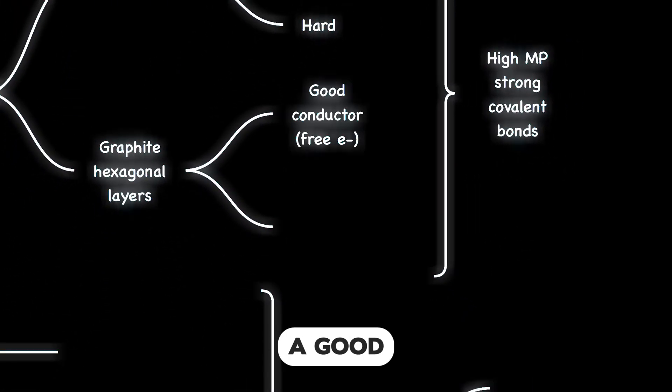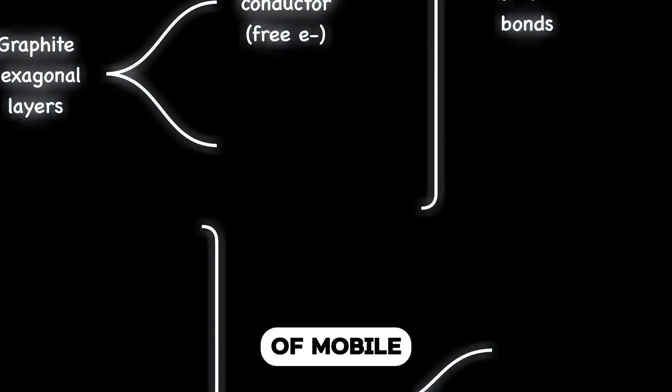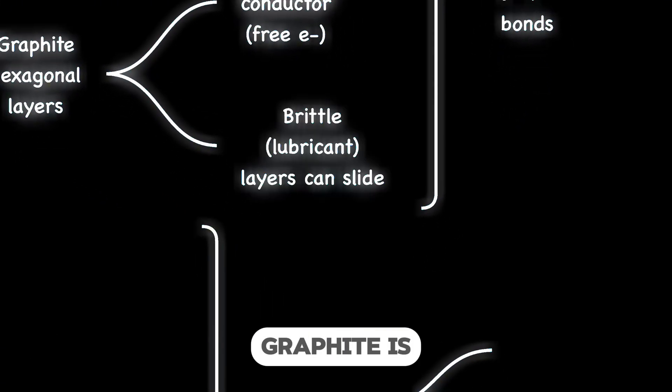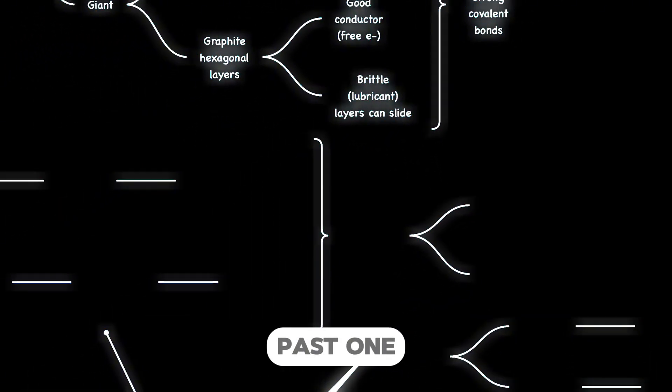Graphite is a good electrical conductor due to the presence of mobile electrons. Unlike diamond, graphite is brittle because the hexagonal layers can slide past one another.